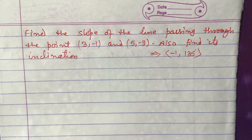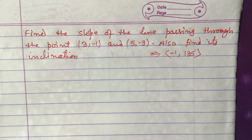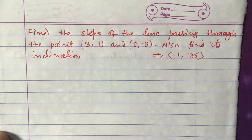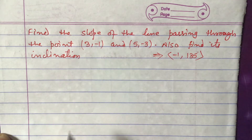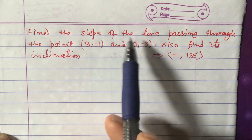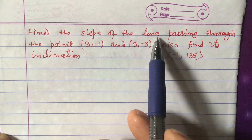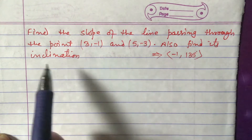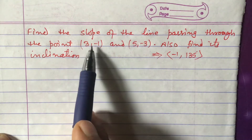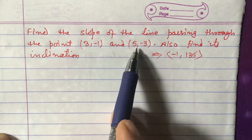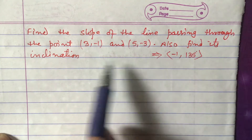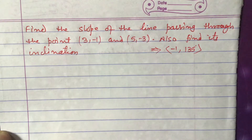Dear students, today I am going to teach you one question related to Class 9 equation of straight line. The question is: find the slope of the line passing through the points (3, -1) and (5, -3), and also find its inclination.